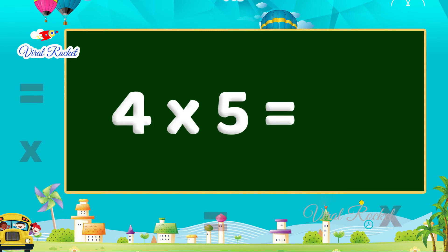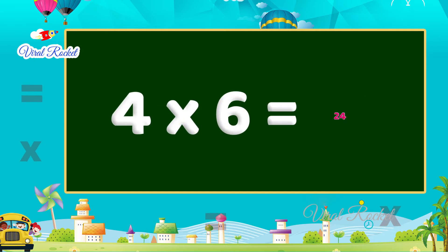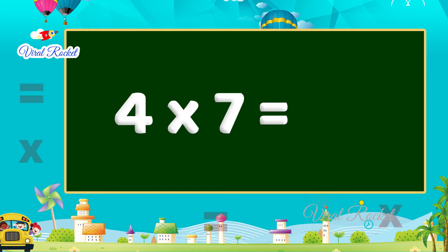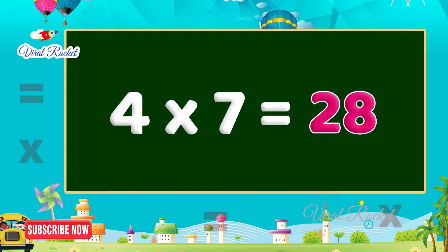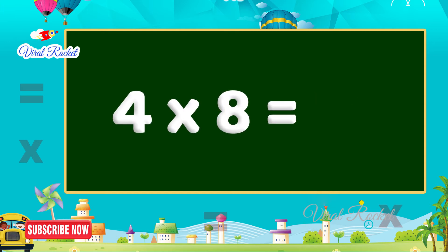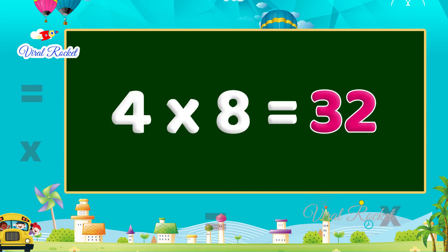Four fives are twenty, four sixes are twenty-four, four sevens are twenty-eight, four eights are thirty-two.